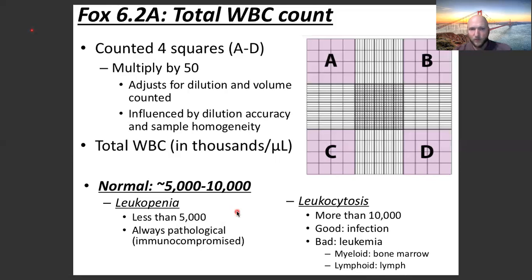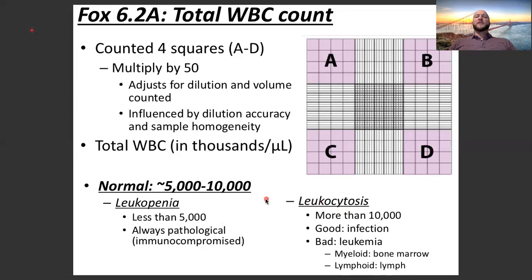What if the patient has 17,000 or 16,000 white blood cells per microliter? Then we would see leukocytosis. 'Cytosis' means more — more white cells than expected, more than 10,000. This could be a good thing or a bad thing. It could be good if the patient has an infection and their body is fighting it, because the body responds by increasing and making more white cells, which helps fight off that infection.